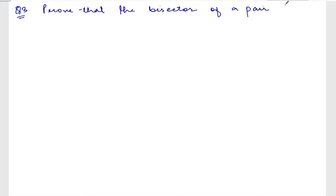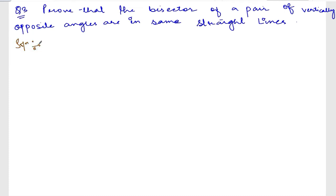Now we are doing exercise 6.2, question number 3. Let me write down the question. The question is: prove that the bisectors of vertically opposite angles are in the same straight line.